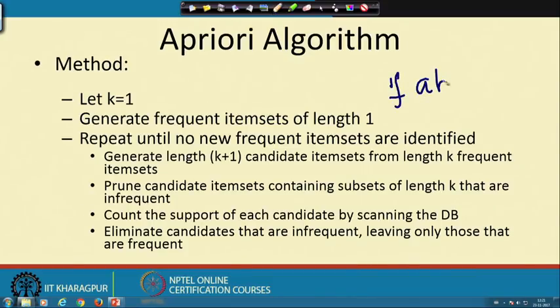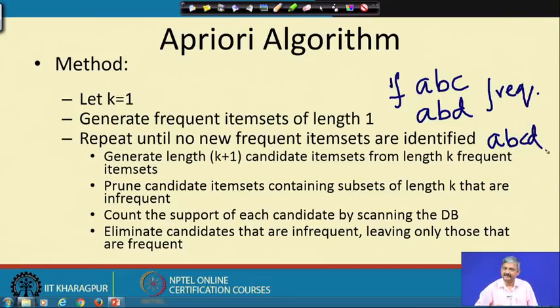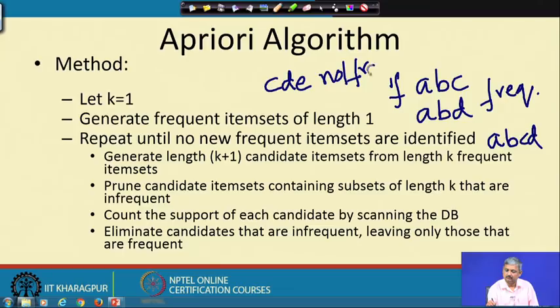For example, A, B, C and A, B, D are 3-item sets. They join to produce the 4-item set A, B, C, D as a candidate frequent item set. Note that it may be frequent or it may not be frequent — to verify, I have to scan through the transactions again. But if A, B, C is not frequent, then A, B, C, D is also not frequent. If something is not frequent, its superset cannot be frequent.